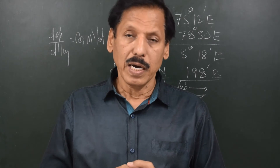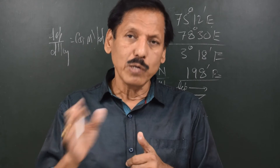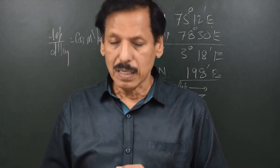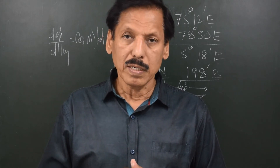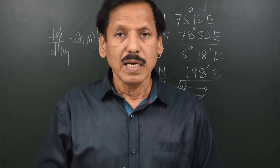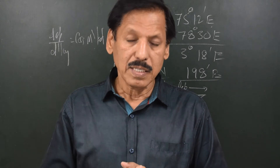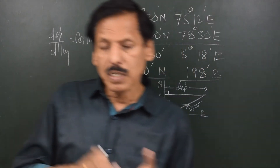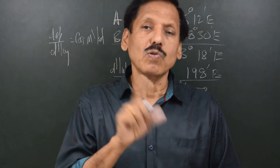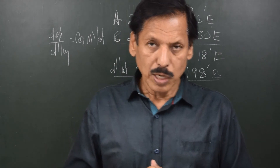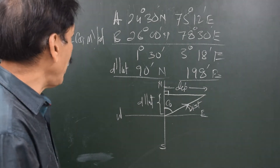Departure and D-Long are related by a cosine and secant relationship. Cosine is a reducing factor — cosine of every angle from 0 to 90 is less than or equal to 1. Secant is an increasing factor — secant of every angle from 0 to 90 is more than or equal to 1. So from departure to D-Long, multiply by secant. From D-Long to departure, multiply by cosine. Departure = D-Long × cos(mean latitude).